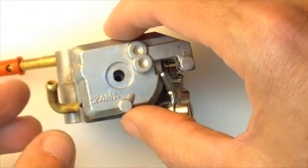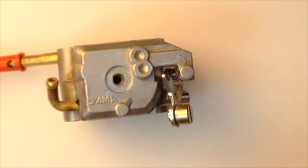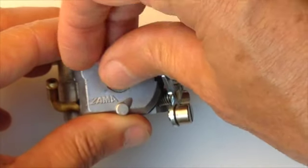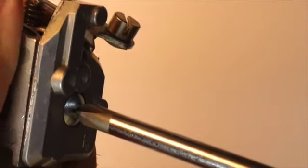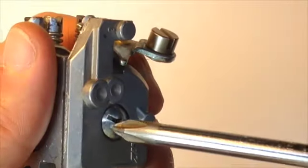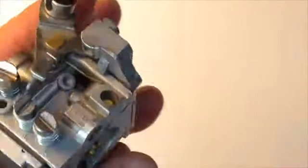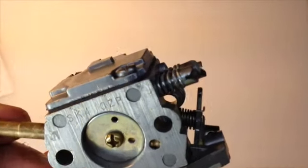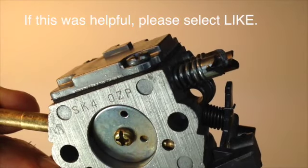Just showing a little contour to look for. Putting the screw back. That's the Zama SK-4 carburetor with a SK-5 kit. Right there you can see the markings on it, SK-4-0-ZP. Thank you for watching.